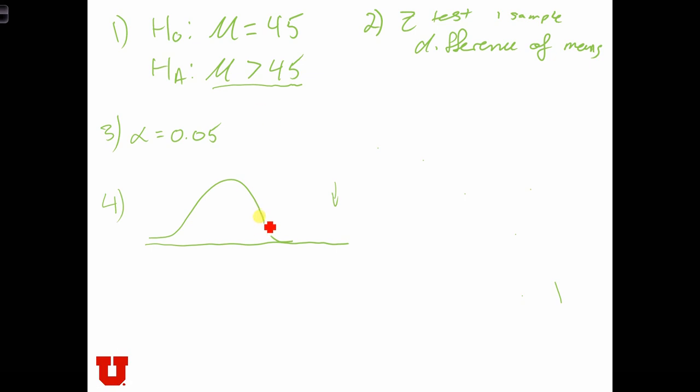So there's only one critical value on the right tail. And this is going to be Z crit.